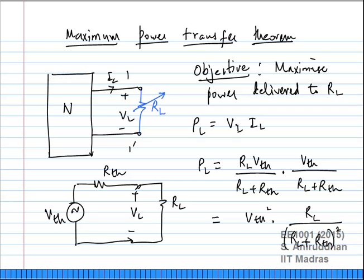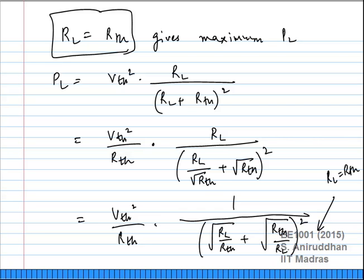If you look at the expression using current, it says I_L squared times R_L. Clearly I_L itself depends on R_L. If you keep increasing R_L, I_L will reduce, and the extreme case is an open circuit where no power is delivered. Similarly, if you keep reducing R_L, the extreme case is a short circuit where again no power is delivered. As it turns out, maximum power happens when the load resistance is exactly matched to the Thevenin resistance.